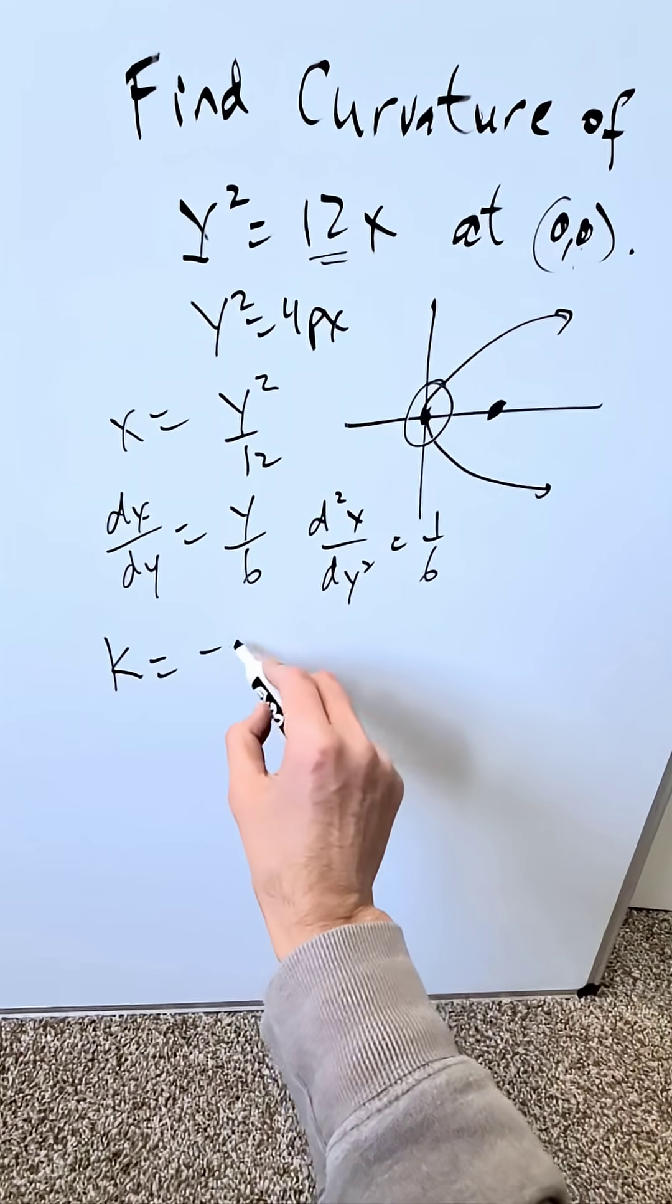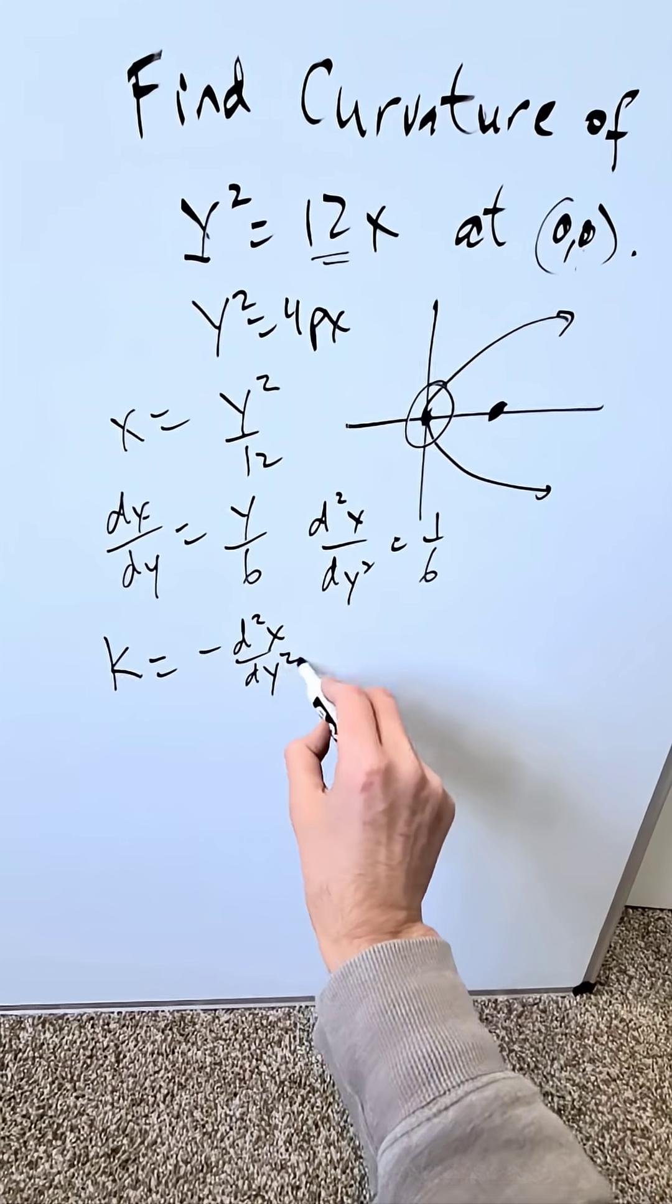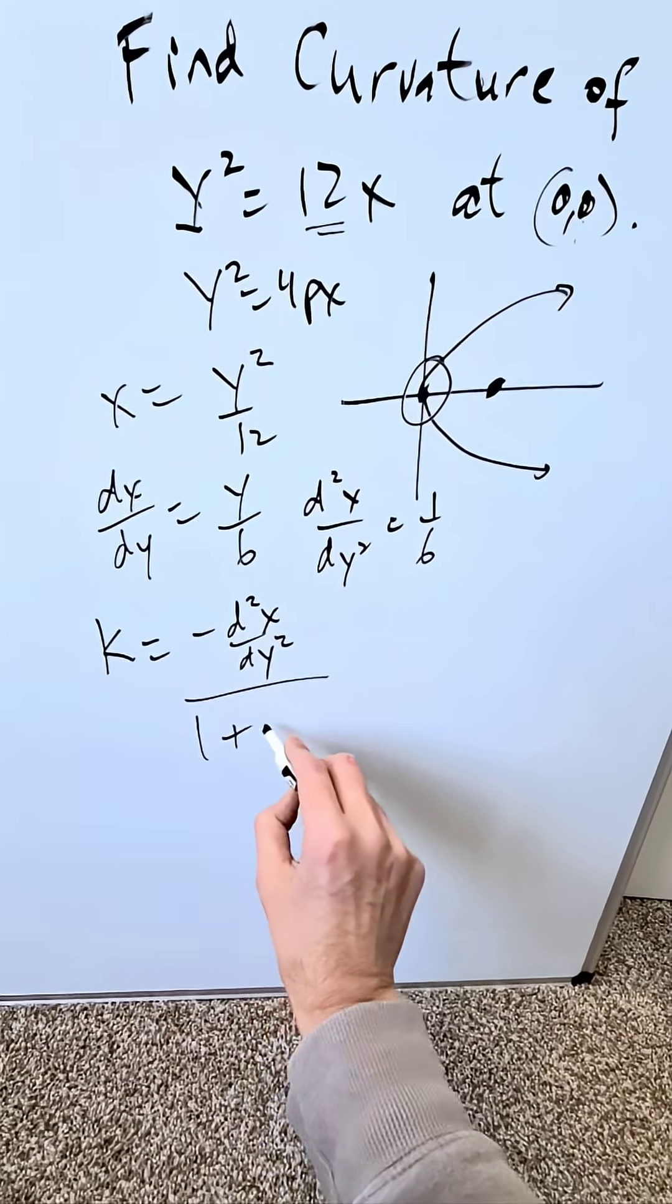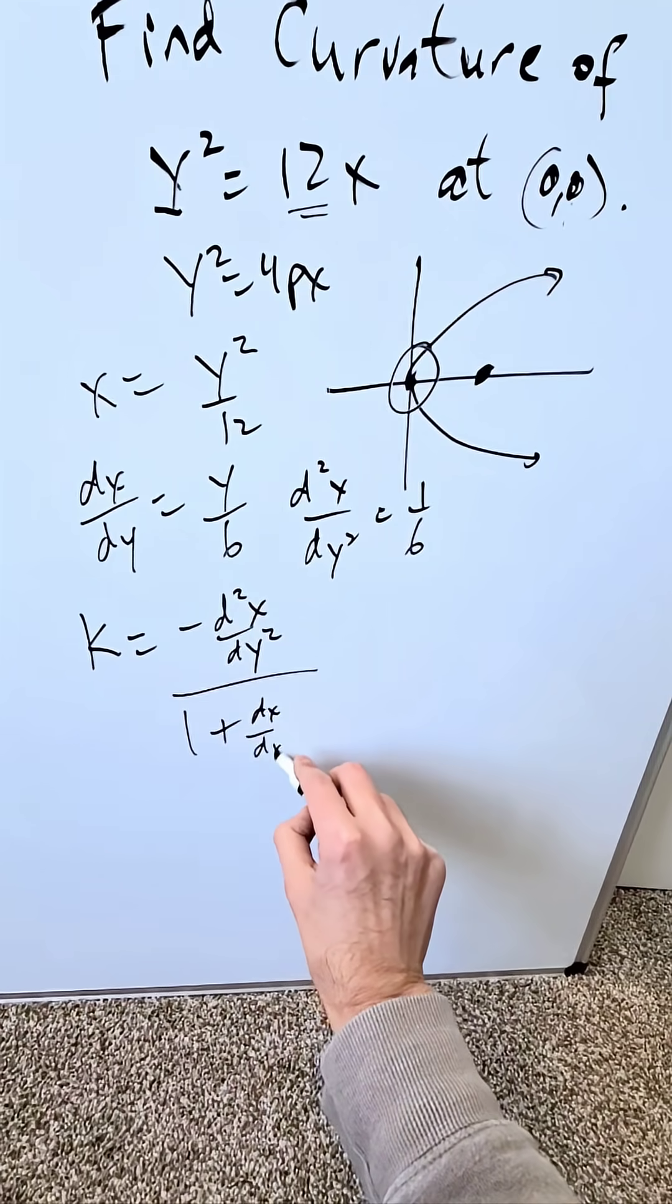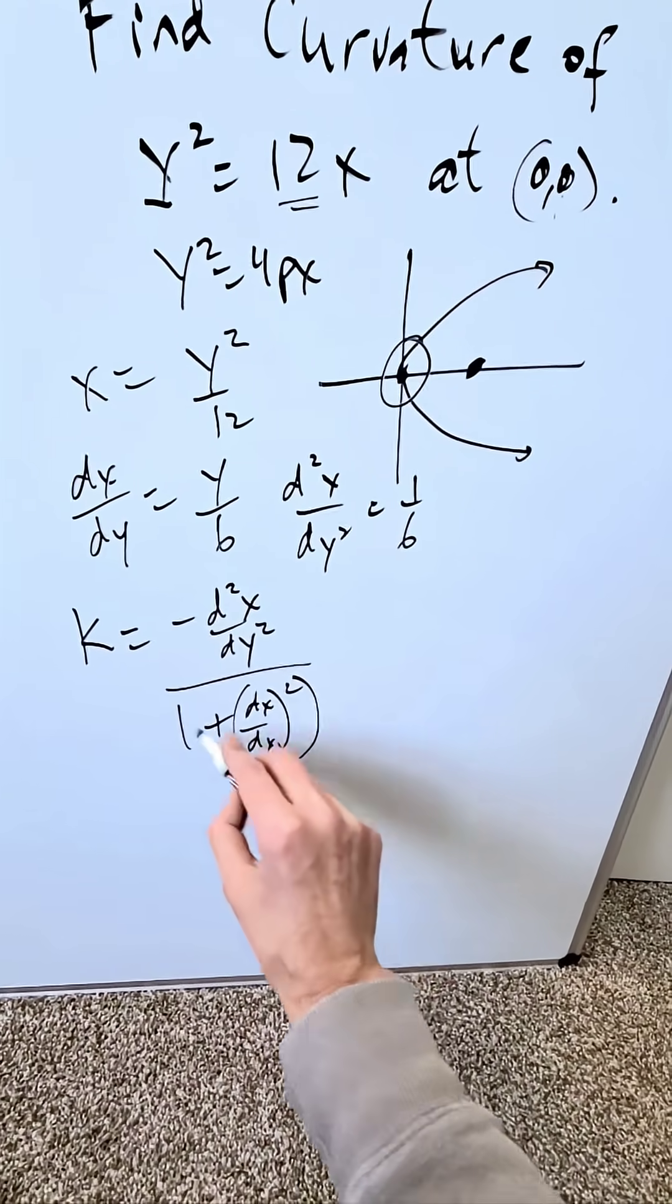Your formula is minus d²x/dy² (this is your second-order derivative) divided by (1 + (dx/dy)²)^(3/2).